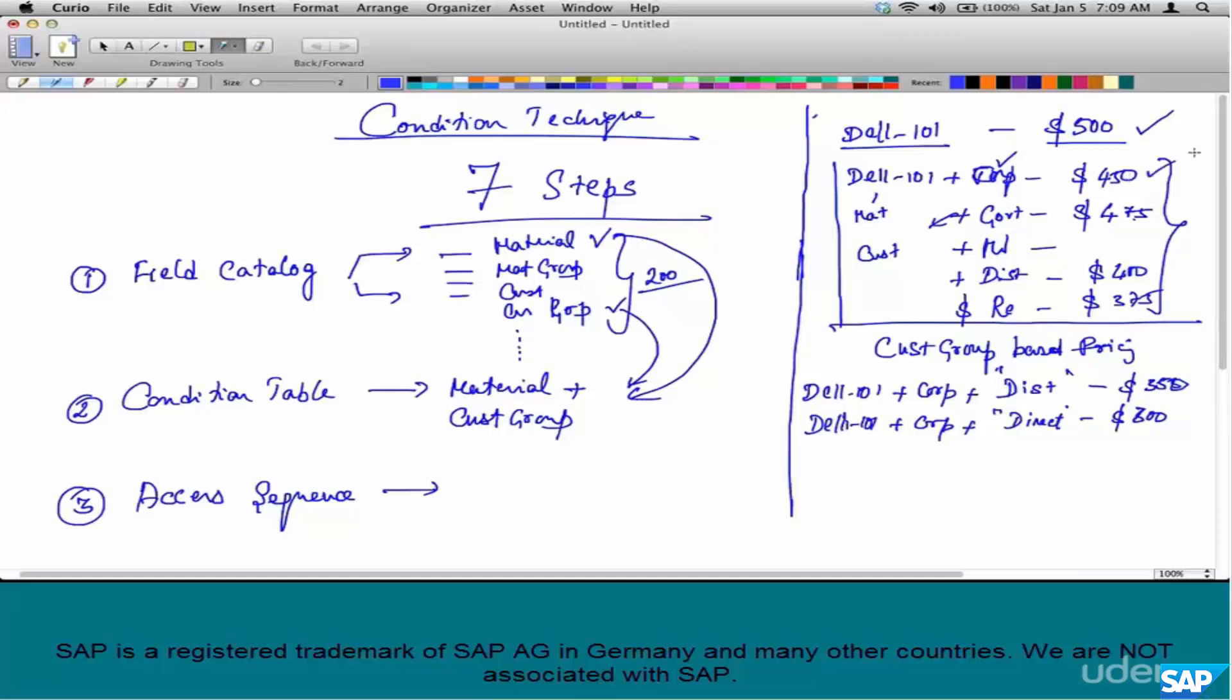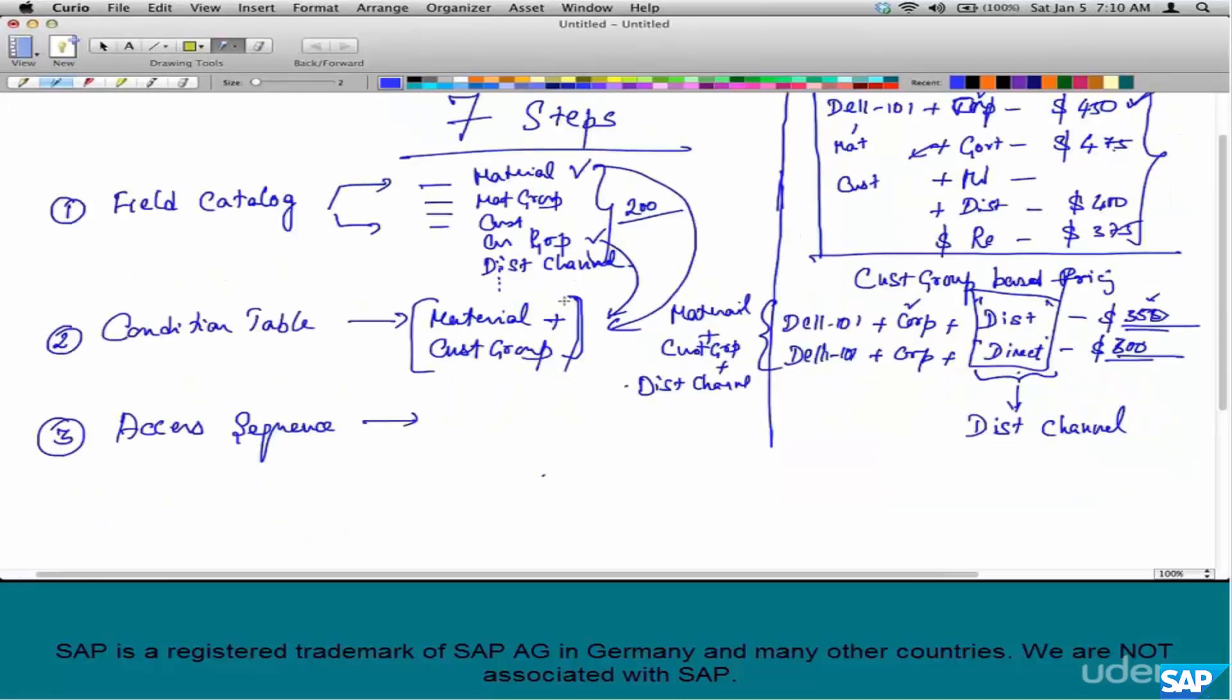How can we configure this? In this case, we will be creating two condition tables. One based on customer group and material, and the other is material plus customer group plus distribution channel. The distribution channel will be one of the parameters in the field catalog. So you pick this, this, and this. You create two condition tables.